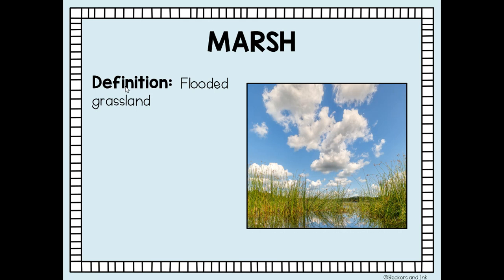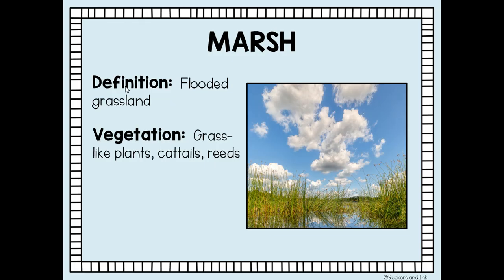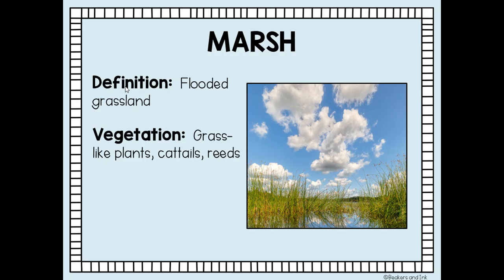The last type is a marsh. The Everglades in Florida is the largest marsh in the United States. A marsh is defined as a flooded grassland. They often form on floodplains where rivers overflow their banks. You'll see lots of grass-like plants, things like cattails and reeds. Marshes are so good at cleaning polluted water that people are actually building replicas to treat wastewater from farms, parking lots, and small sewage plants. The climate in a marsh is usually warm and humid.